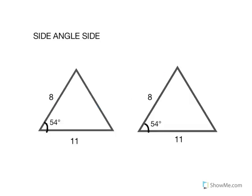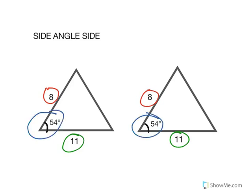Side-angle-side shows congruency when there are two triangles where we know two sides and the included angle are equal. For example, we have an eight on one side, an eleven on the other side, and in between is an angle of 54 degrees, which is equal on both triangles. So they are congruent by side-angle-side.